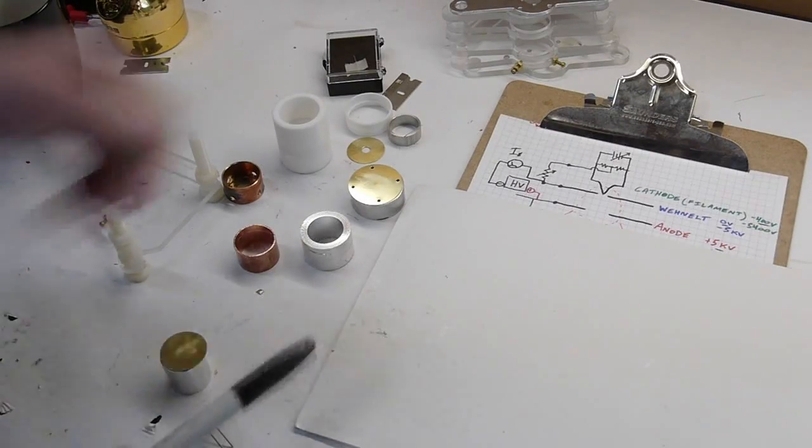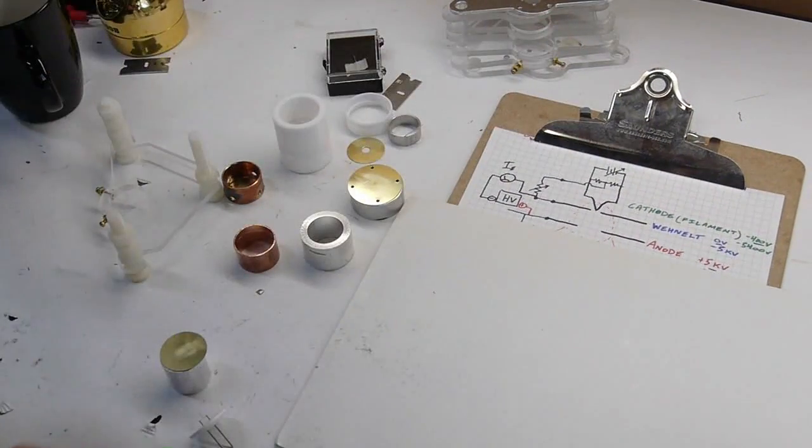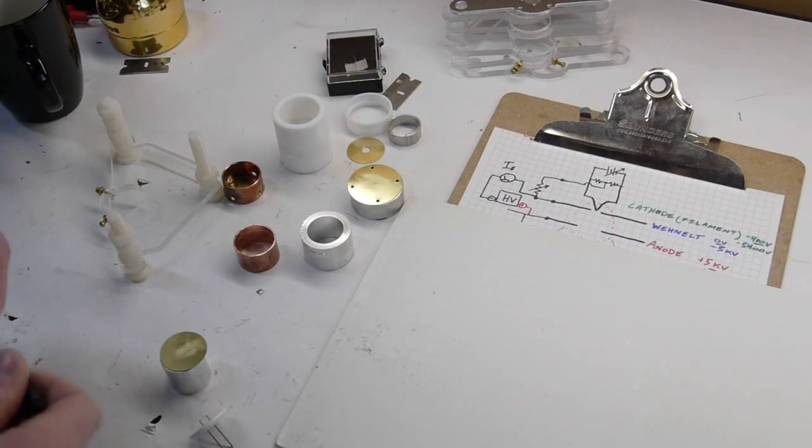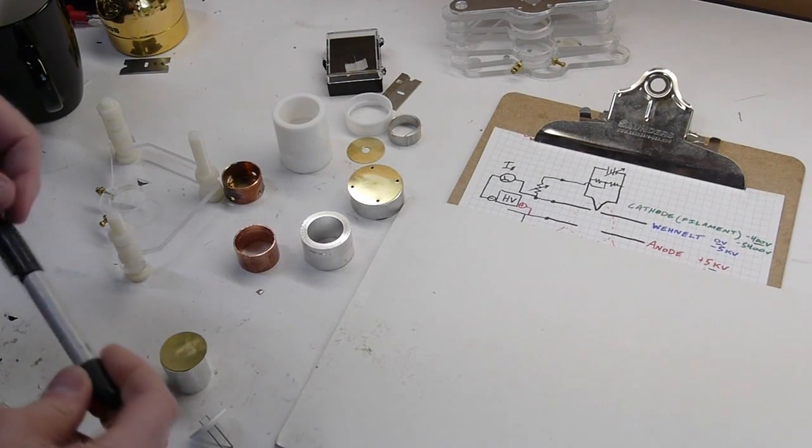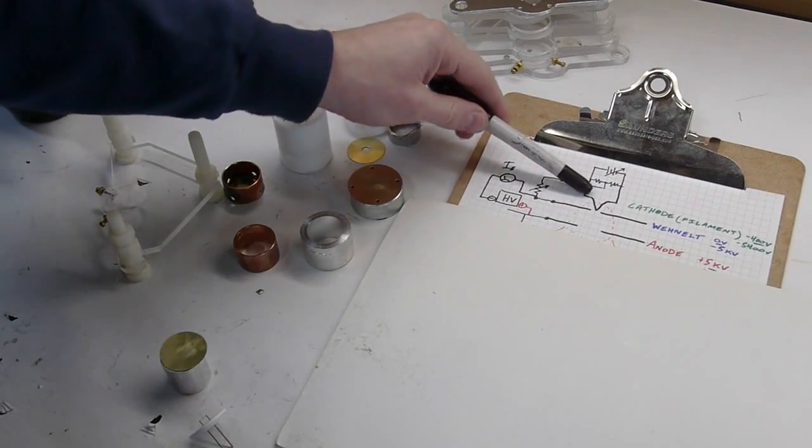So here is a schematic of the electron gun in the electron microscope and I will run through the parts of it and how it's built first and then talk about operation. So at the top, this curved piece represents the filament, also called the cathode. In this case they're the same.